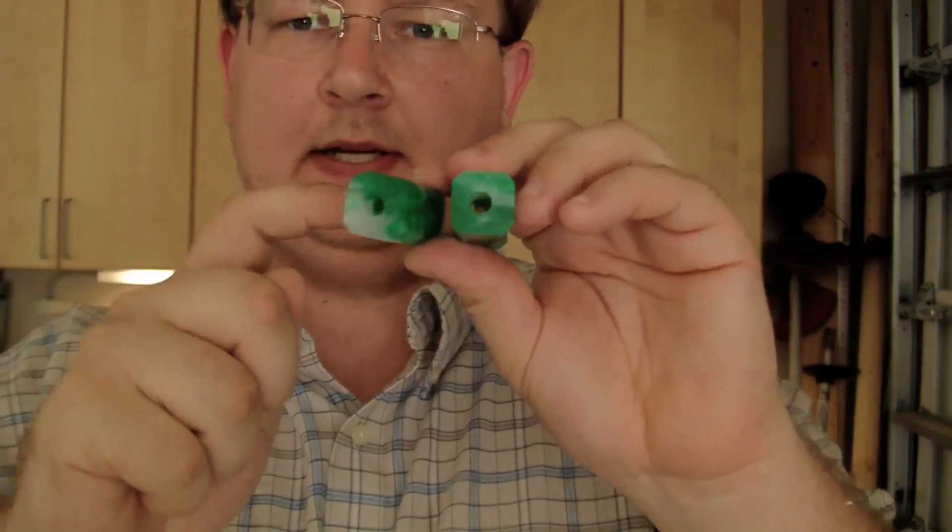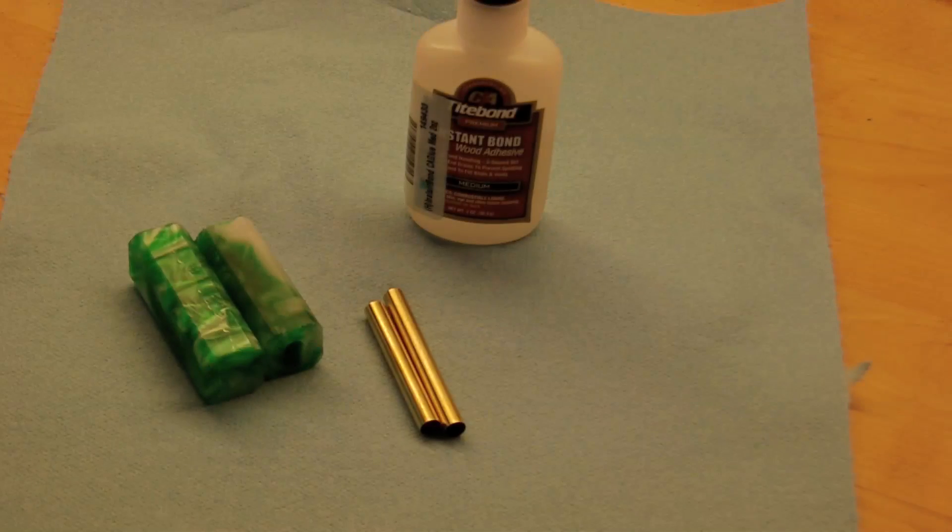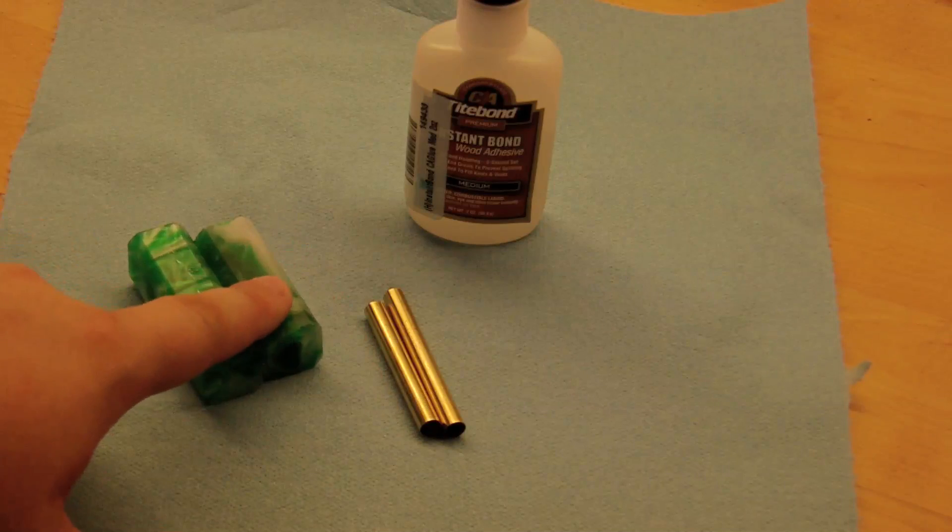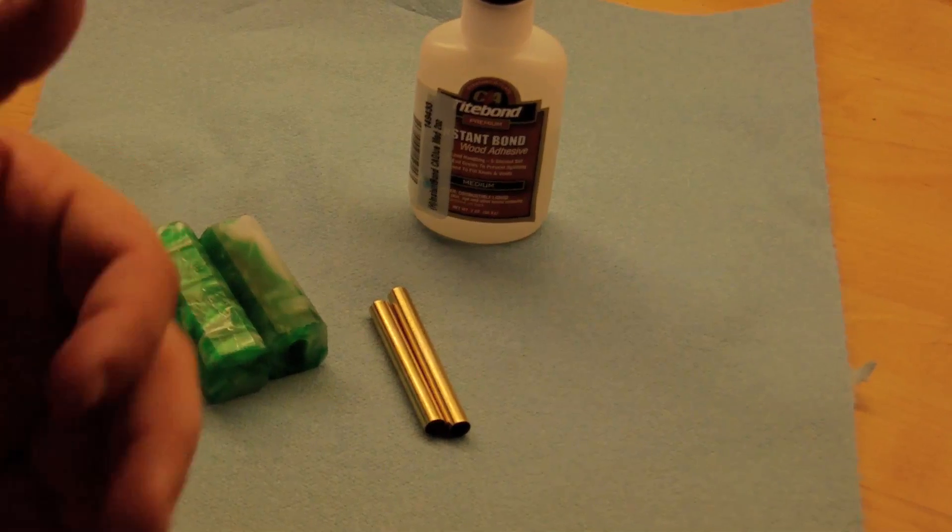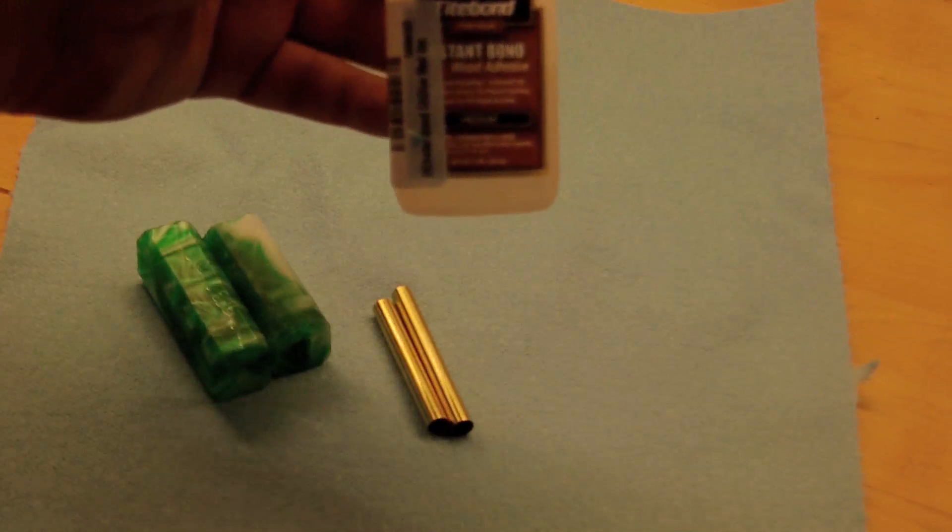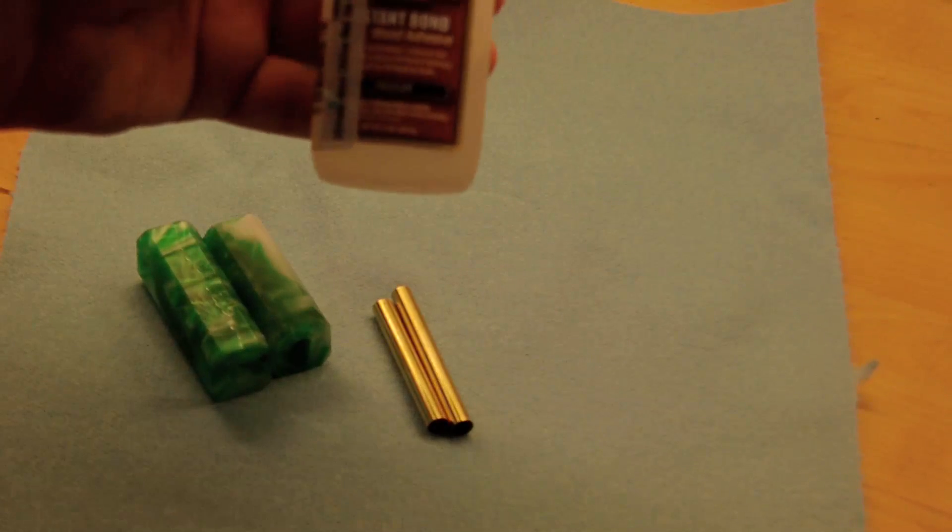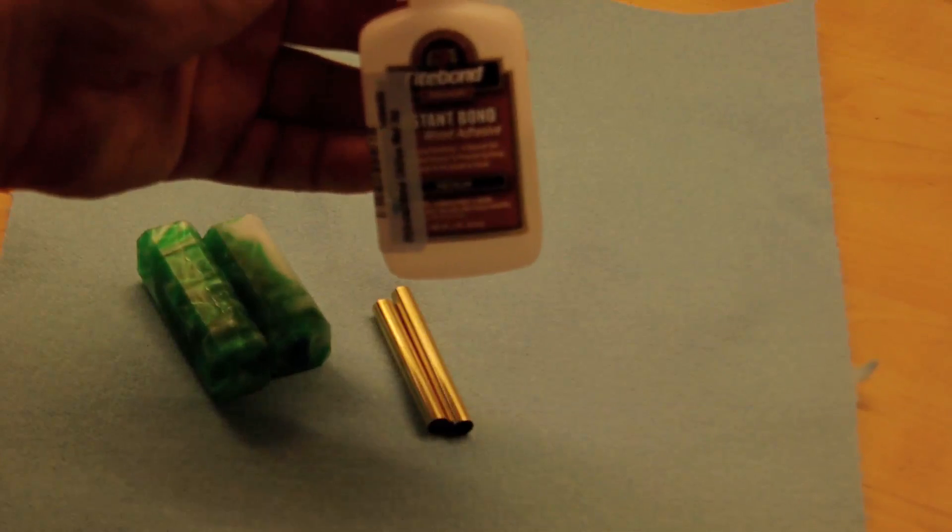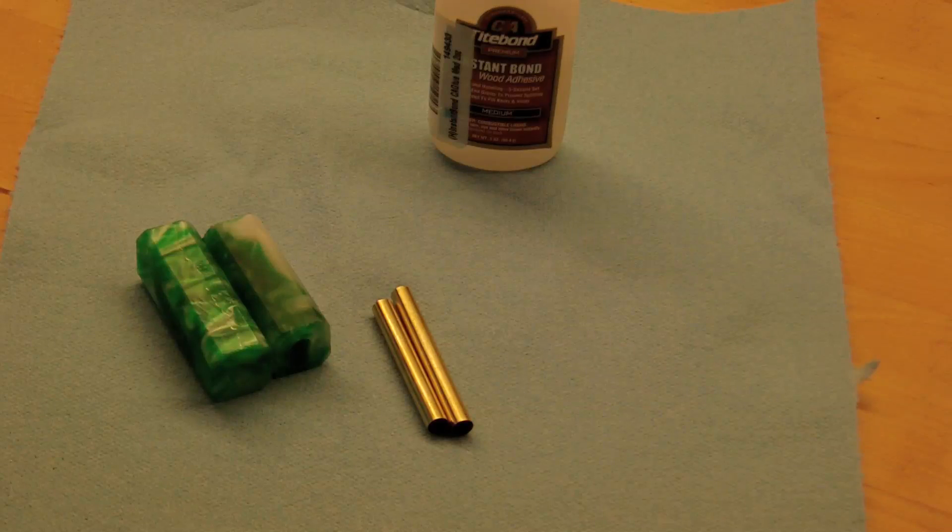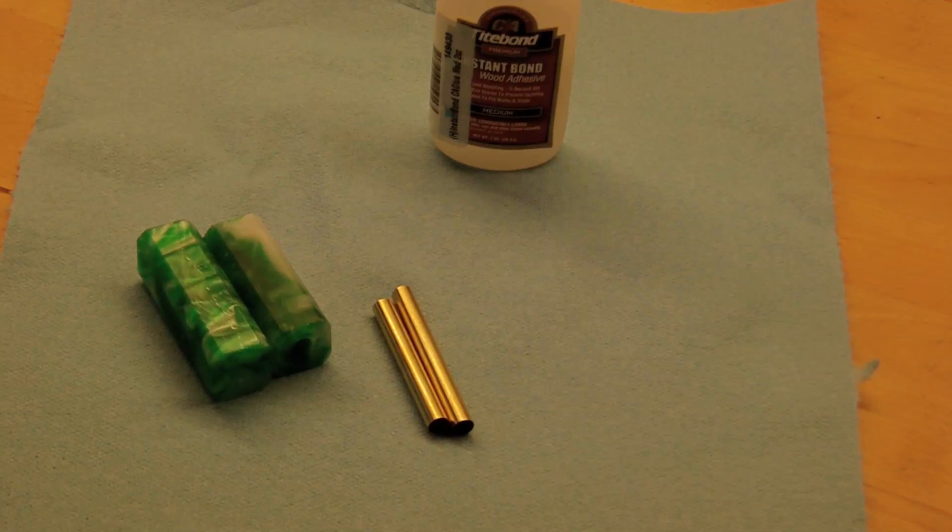Next thing to do is to glue these tubes inside the pen blanks. The next step is going to be to glue the metal tubing into the acrylic pen blanks. In order to do this you need some type of strong glue or epoxy. Today I'll be using Titebond, an instant bond wood adhesive. It works great on this application though. They have three different types: thin, medium and thick. Typically I recommend the medium because it gives you a little bit of time to work with it.